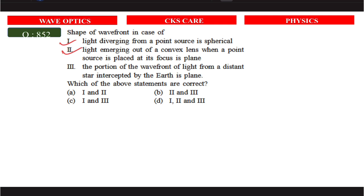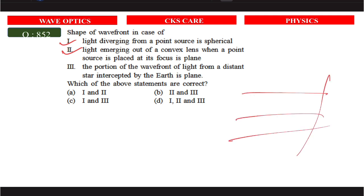The portion of the wavefront of light from a distant star intercepted by Earth is plane — a distant star produces a planar wavefront. So the answer is D, plane wavefront.